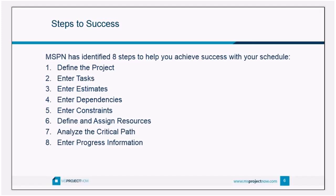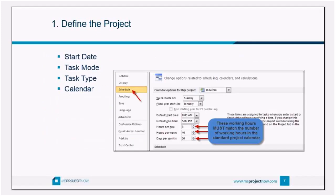In step one, when you define the project, you want to set the project start date. I can't tell you how many times I've seen people create a milestone at the top of their schedule, call it 'start,' set a date on it, and link it to every task. There's a much easier way — go into Project Information and set that start date. You can also set a different calendar there, and we're going to talk about task mode and task type.